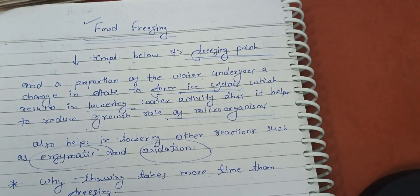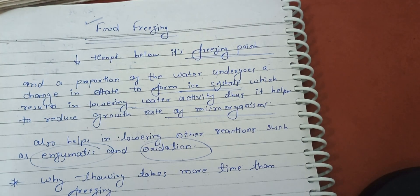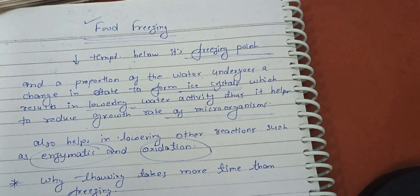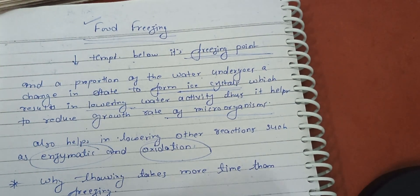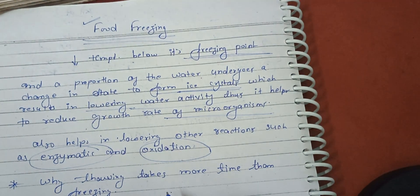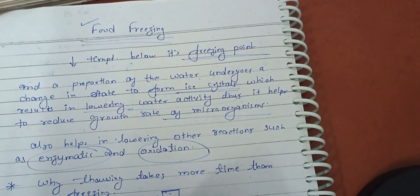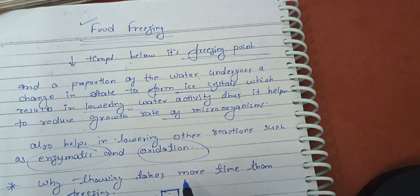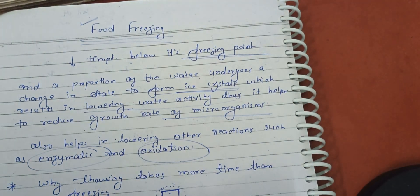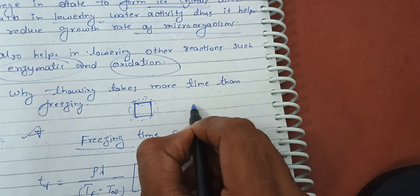Freezing also helps in lowering other reactions such as enzymatic reactions and oxidation. Another important concept in food freezing is why thawing takes more time than freezing. During thawing, we convert the food from solid to liquid. When thawing starts, the outer layer becomes liquid, and that liquid outer layer has lower thermal conductivity and thermal diffusivity.